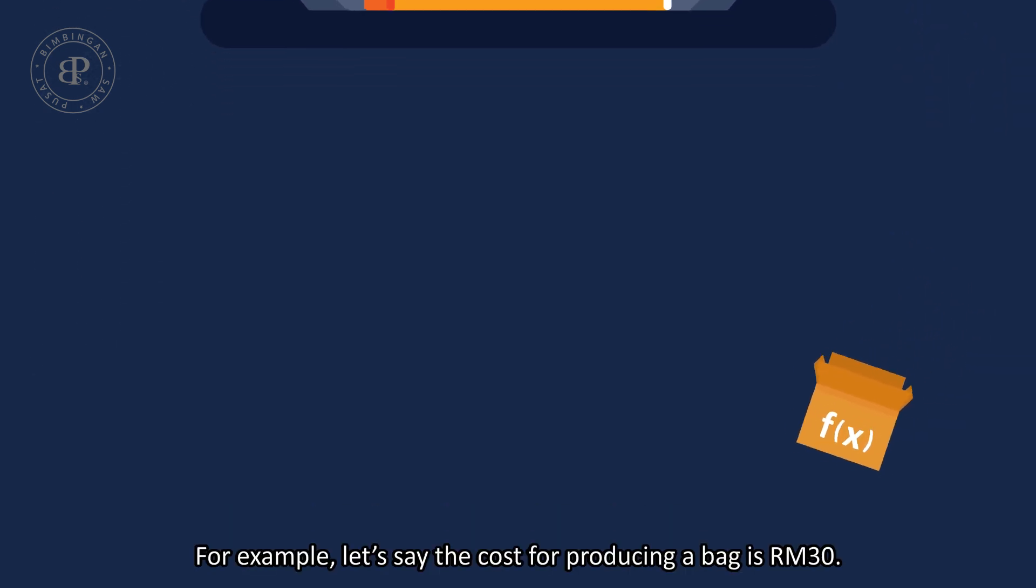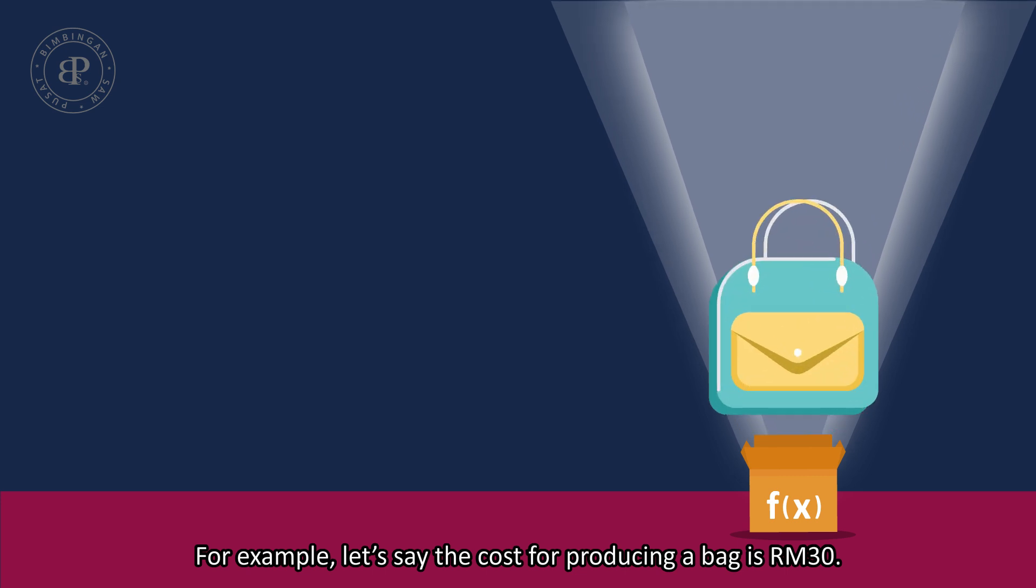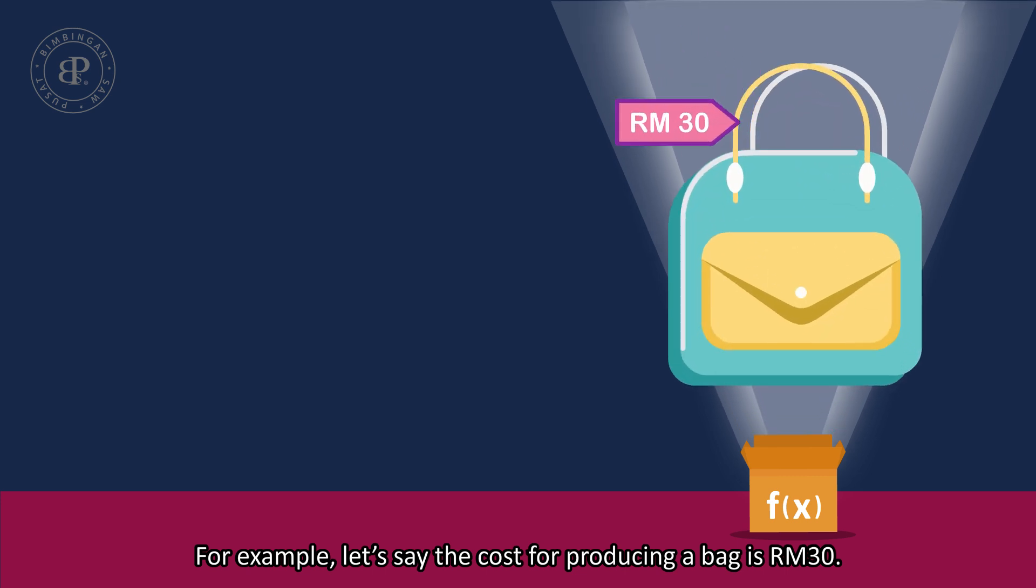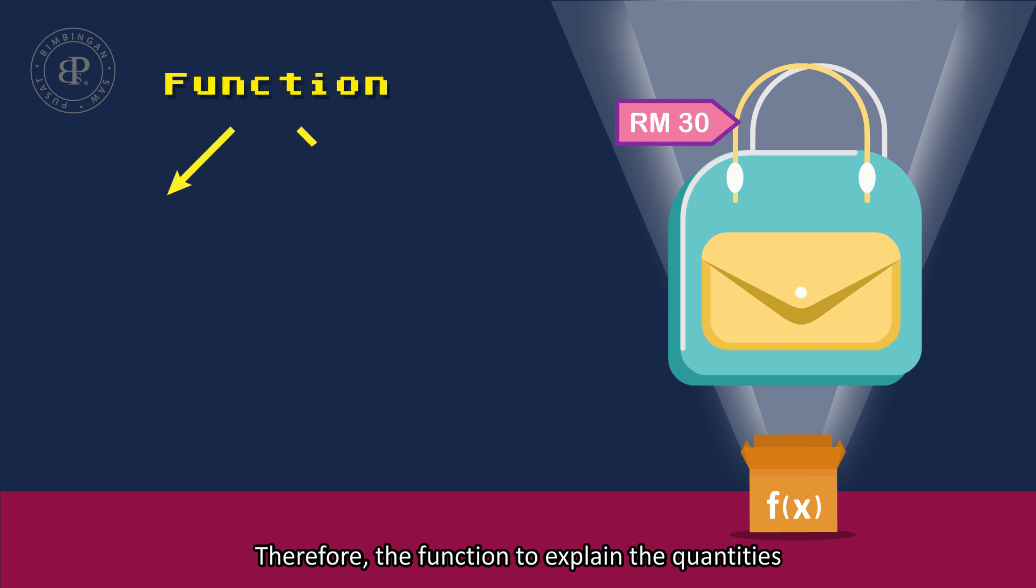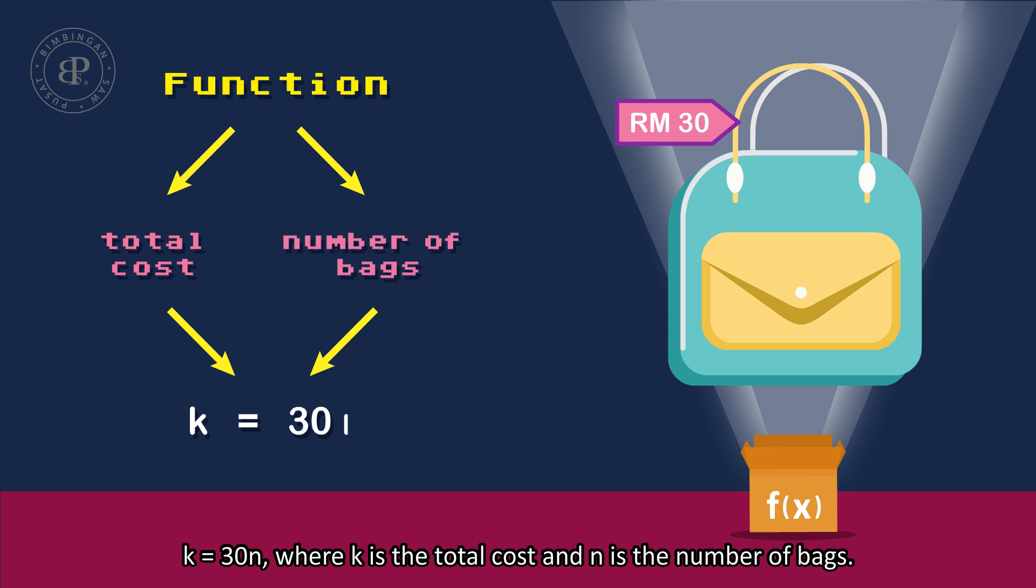For example, let's say the cost for producing a bag is RM30. Therefore, the function to explain the quantities between the total cost and the number of bags should be written as k equals 30n, where k is the total cost and n is the number of bags.